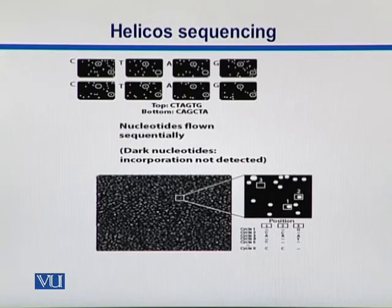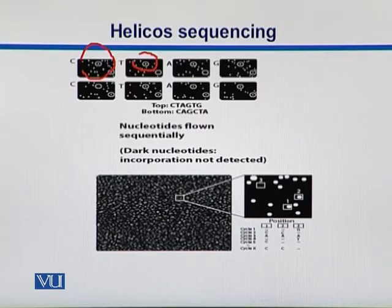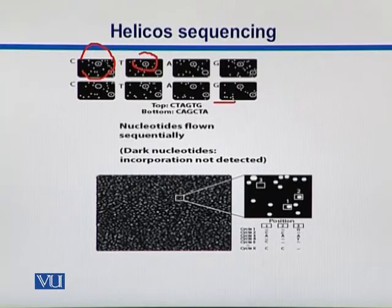Here we can focus on two reads which have been synthesized. If we look at the top one, whenever a nucleotide is incorporated, we see a visible dot. For example, we see that C has been incorporated, then in the same read T is incorporated, then A and G. So on this top read, we see that there was C, T, A, G, T, C that has been incorporated. Whereas in the bottom read, we see that in the C reaction there is an incorporation, but in the T reaction it is not incorporated.